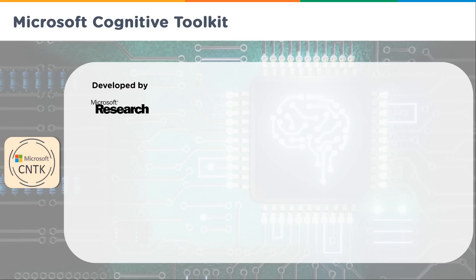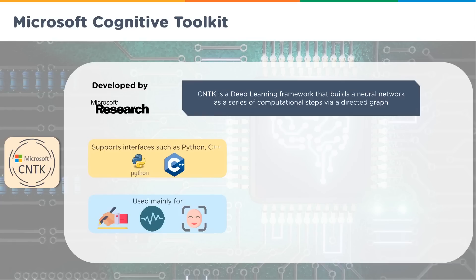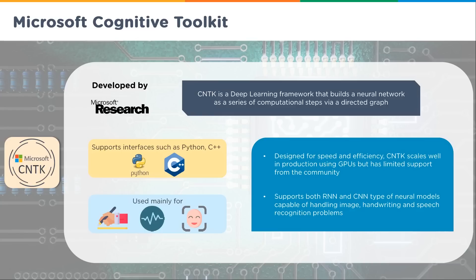Microsoft CNTK, developed by Microsoft Research, is a deep learning framework that builds a neural network as a series of computational steps via a directed graph. It supports interfaces such as Python and C++. It's designed for speed and efficiency — because neural networks eat up so much processing power for all the calculations involved. CNTK scales well in production using GPUs but has limited community support. It supports both RNN and CNN type neural models capable of handling image, handwriting, and speech recognition problems.